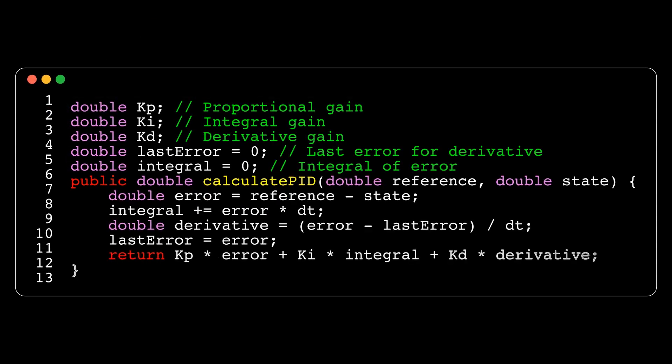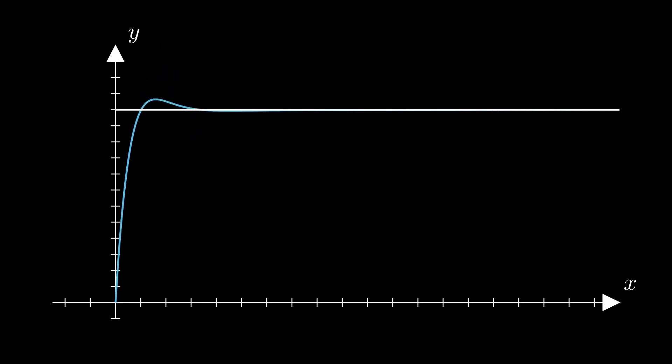Lastly, we need to get rid of these oscillations to get an optimal response. To accomplish this, we can implement a derivative, or in this case, an approximation using a simple difference equation. The derivative factors in our rate of change and dampens our system's response.